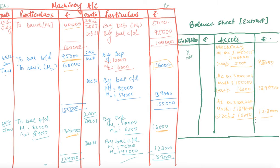With this, the question is complete — we prepared both the machinery account and the balance sheet. If you are required to prepare the depreciation account, we have already discussed how to do that: each year's depreciation is transferred to the Profit and Loss account. Please go through the previous class for the depreciation account. For further sequential studies, please download our app Scholars Learning. Thank you.